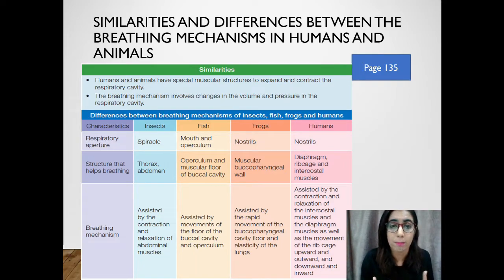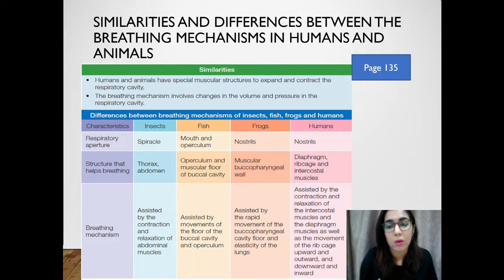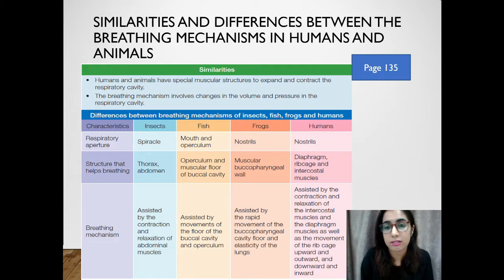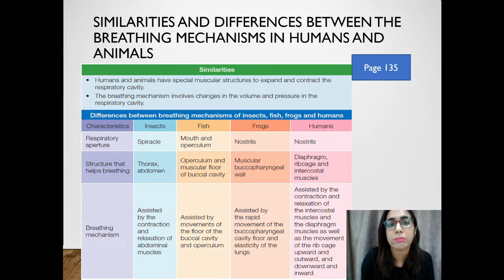To achieve the learning objective, you must be able to compare and contrast the breathing mechanism in humans and animals. The summary of what we have discussed in this lesson is on page 135, where you can go through the similarities and differences of the breathing mechanisms in humans and animals.